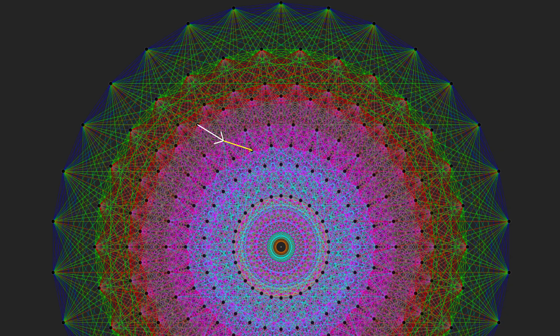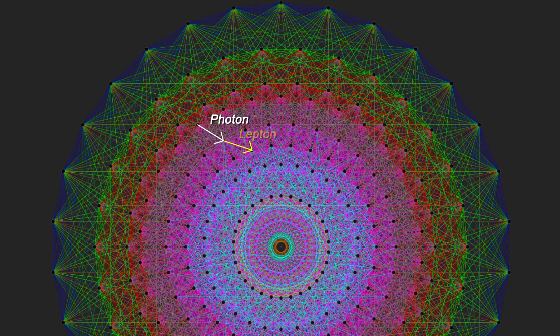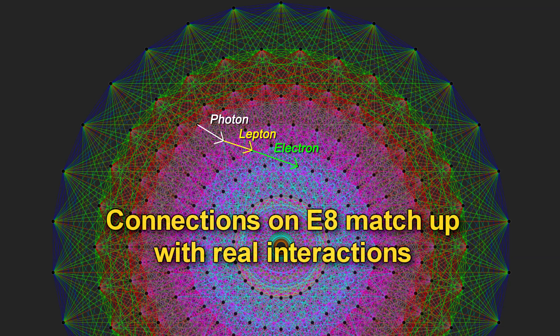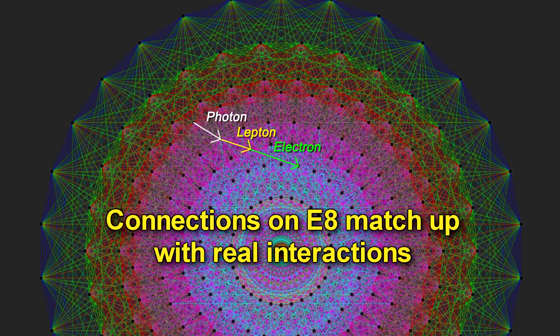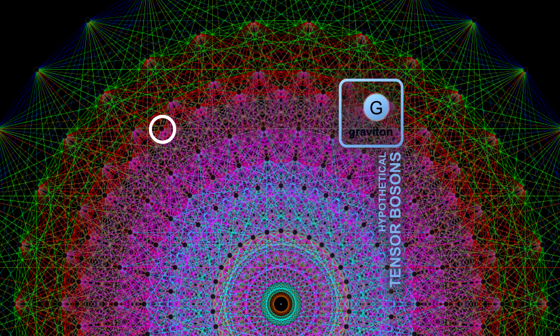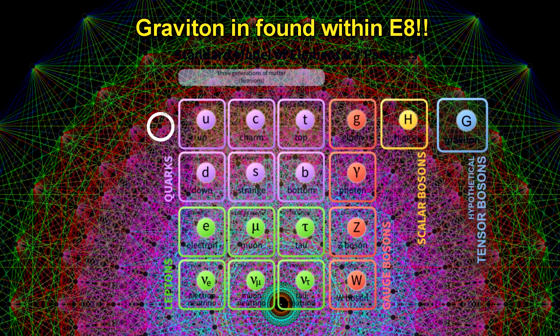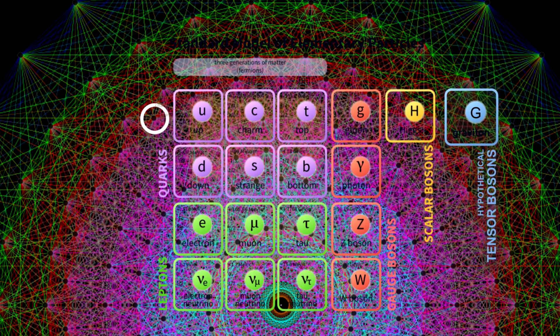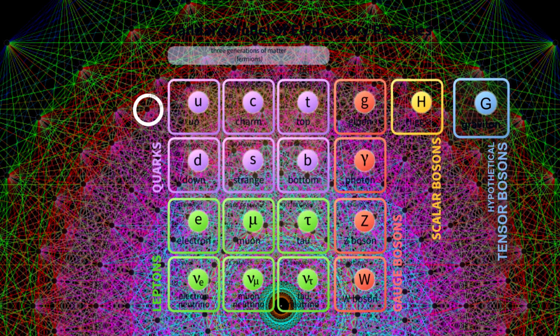Take another look at E8 and notice how the lines radiate from each point. Lisi also found patterns emerging between particles and forces, like they happen in actual reality. For example, when photons interact with leptons, they create electrons — and the same thing happens in the E8 lattice. The connections shown within points on the E8 match up to real, known connections between particles in our physical world. One of the particles he assigned to this shape behaves very much like the force carrier for gravity, or a graviton. And this is the key to Lisi's claiming that this could be the theory of everything, because it combines matter particles and gravity in one framework — something that has been a holy grail in physics.